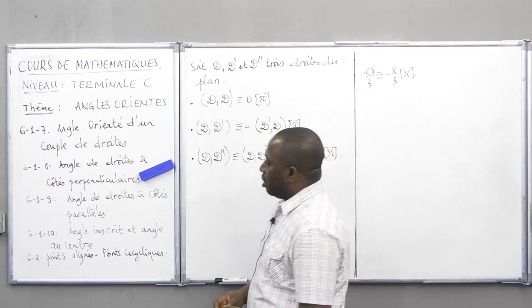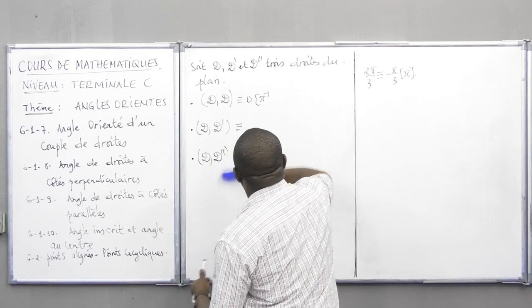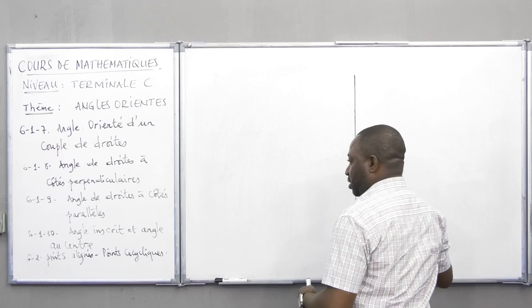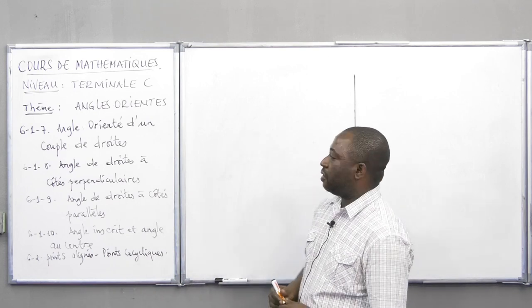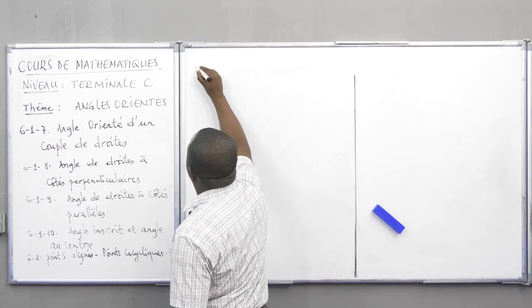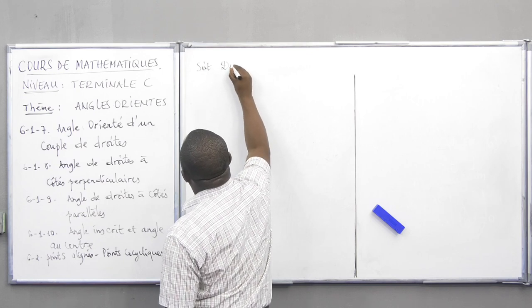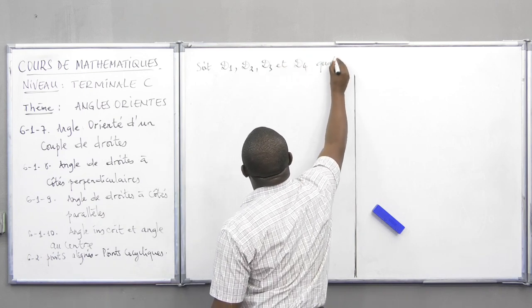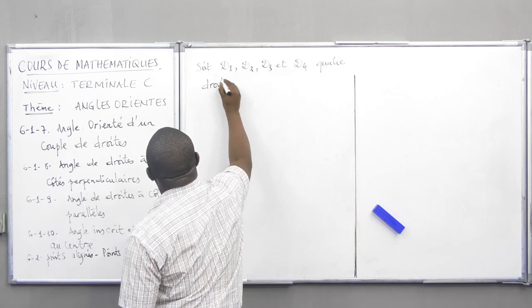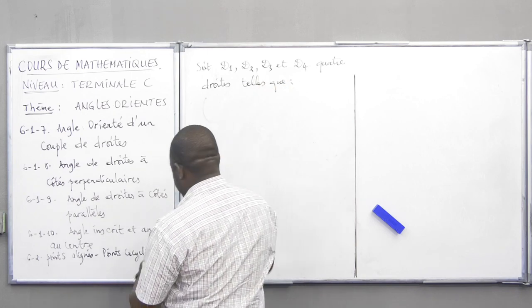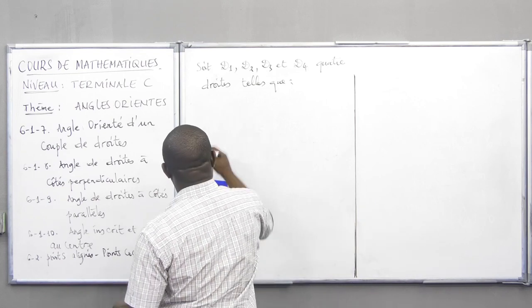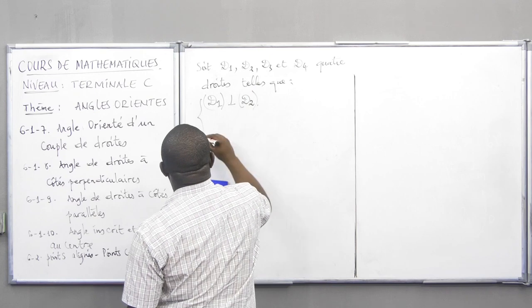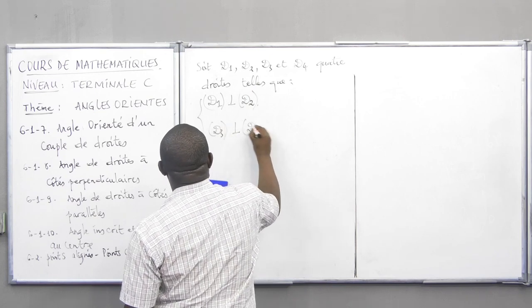Nous allons passer à la propriété de droite à côté perpendiculaire. On va prendre deux droites qui sont respectivement perpendiculaires à deux autres droites et voir ce qui va se passer. Quelle sera la relation entre l'angle formé par les deux premières droites et l'angle formé par les deux autres ? On prend quatre droites D1, D2, D3 et D4, telles que D1 est perpendiculaire à D2 et D3 est perpendiculaire à D4.